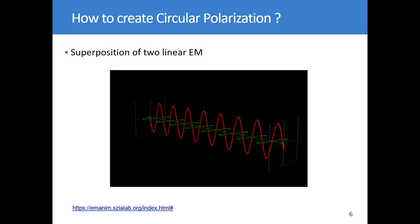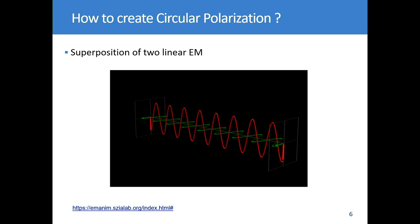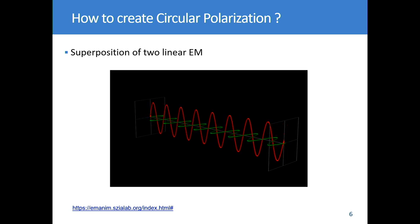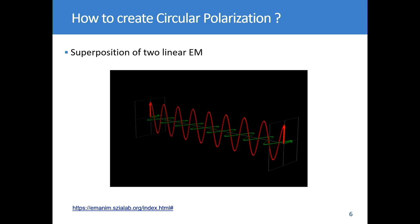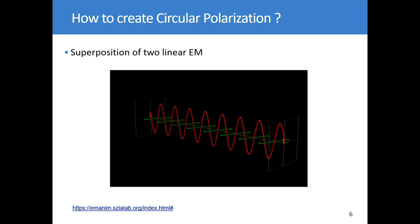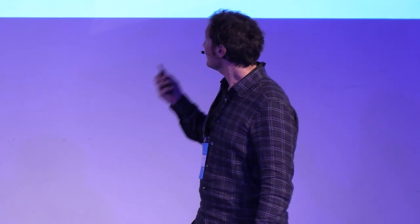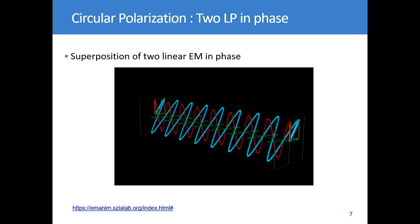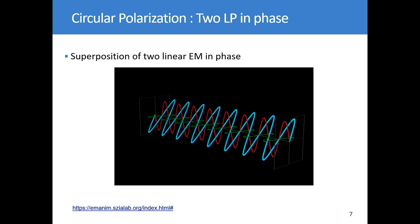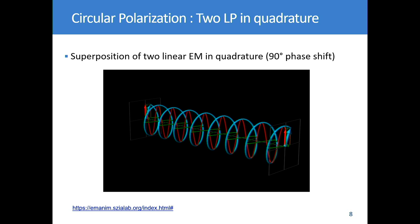Most of the time, circular polarisation is created from linear polarisations by superposing multiple linear polarisations. The classical solution is to use two orthogonal electric fields. If the two orthogonal electric fields have the same phase, you get a diagonal polarisation. But if you use a phase shift of 90 degrees between the two electric fields, then you create a beautiful circular polarisation.